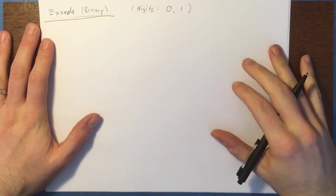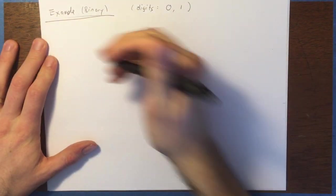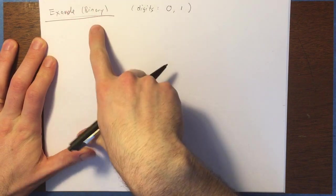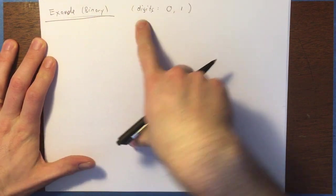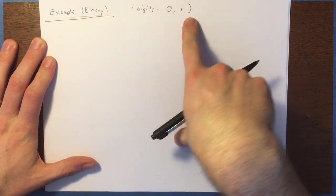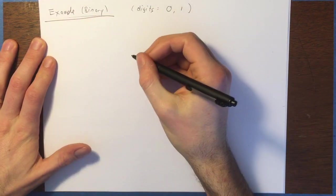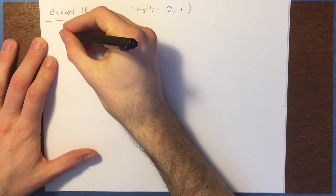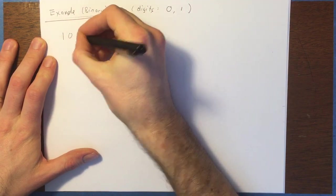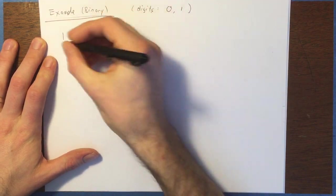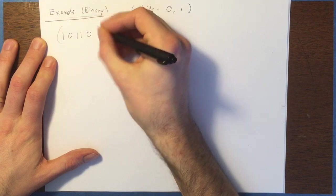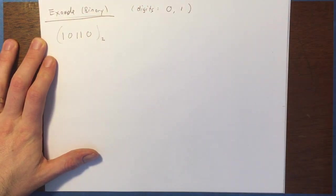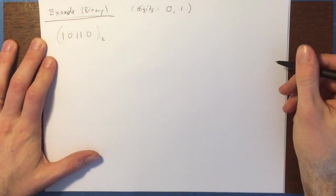All right, we're going to do an example in binary. So remember, binary is base 2, and so the digits available are 0 and 1. Now I'm going to write out a number in binary: 1, 0, 1, 1, 0. And to indicate that this should be interpreted in binary, I'm going to put parentheses and a subscript 2 — base 2.